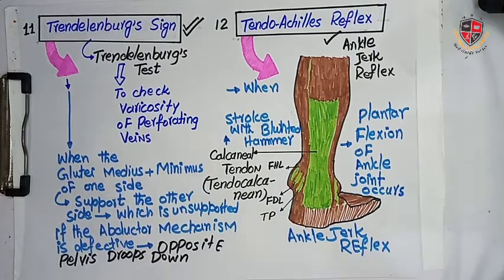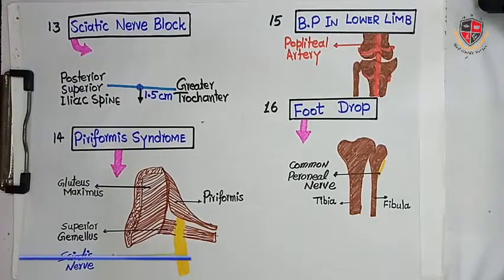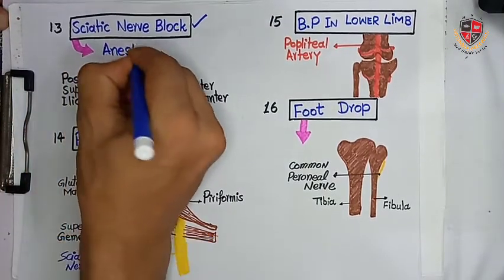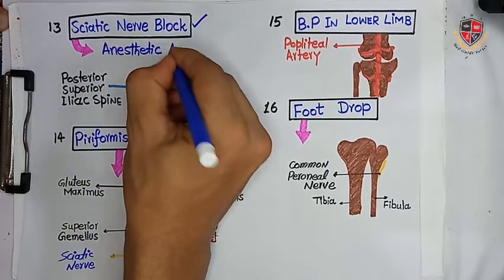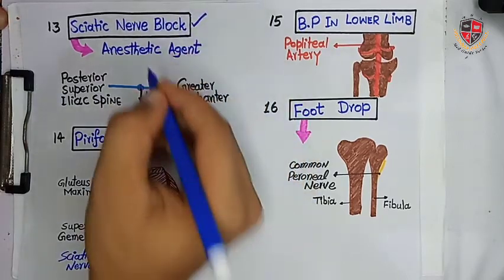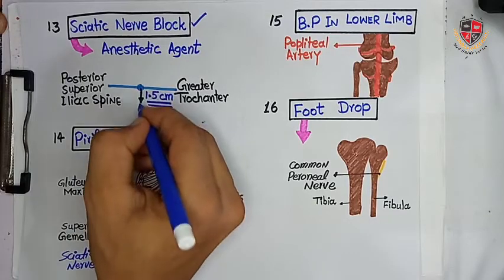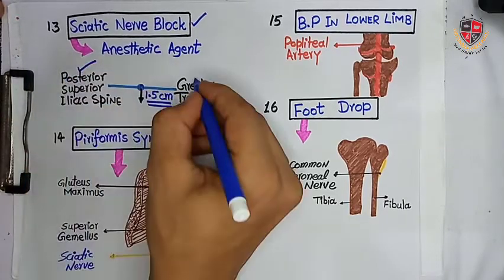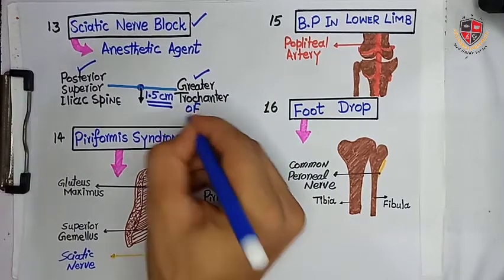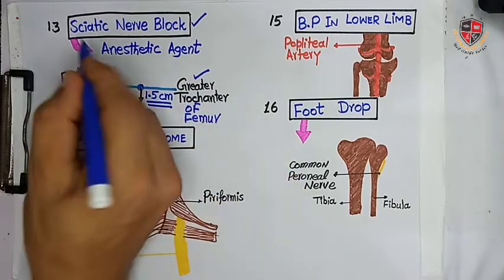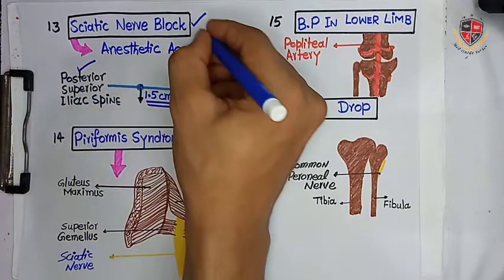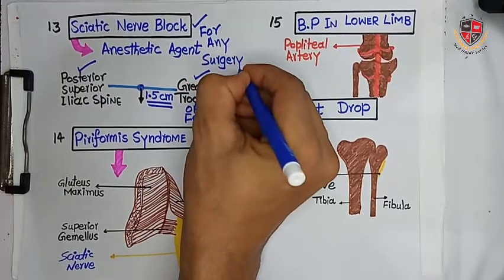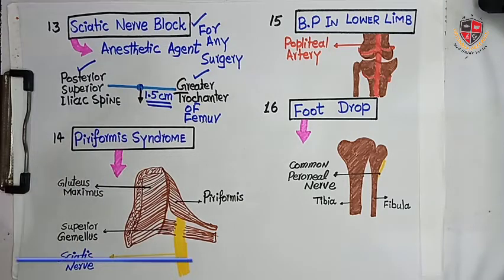It is called Ankle Jerk Reflex, or Tendo Achilles reflex. The next clinical is Sciatic Nerve Block. Sciatic Nerve Block is done by injecting an anesthetic agent at 1.5 cm below the midpoint of the line joining the posterior superior iliac spine and greater trochanter of the femur. It is used to perform surgery.